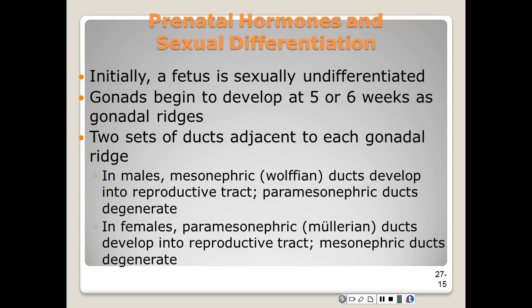Up to a certain point, a fetus is sexually undetermined. Its gonads begin to develop at about five to six weeks as gonadal ridges, usually laying alongside a primitive kidney which later degenerates. Adjacent to each of the gonadal ridges are two ducts: the mesonephric duct and the paramesonephric duct.